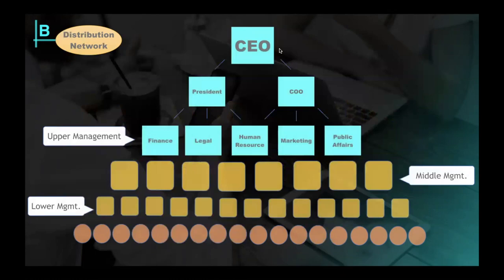Millions of people have created walkaway residual income building their own company, but it's extremely challenging. But here's what it looks like. There's the CEO at the top of this hierarchical structure. Under the CEO is the president and COO. Under them are more people working in this network, upper management, finance department, legal department, human resources, marketing, public affairs. There could be many other departments as well. Underneath upper management are more employees. We call them middle management.